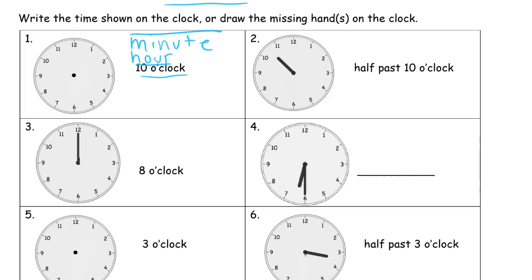When you're drawing clock hands, be careful. Your minute hand should touch the numbers, but your hour hand doesn't — it's shorter. So for 10 o'clock, your minute hand is going to be touching the 12, and your hour hand is going to be pointing towards the 10. Make it long enough to see the direction but not so long that it actually touches the number. You want to see the difference between the two hands.